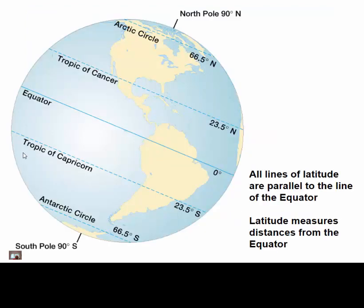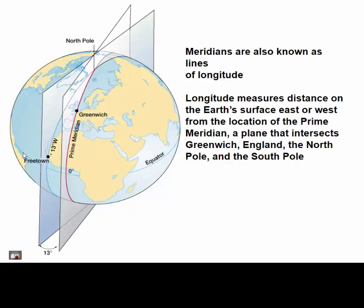All lines of latitude are called parallels. As we go further north or south, the length of those parallels gets shorter. At the equator it's about 24,000 miles, and as we move further north it's dependent upon the cosine of your latitude — but I don't want to get into too much trigonometry.